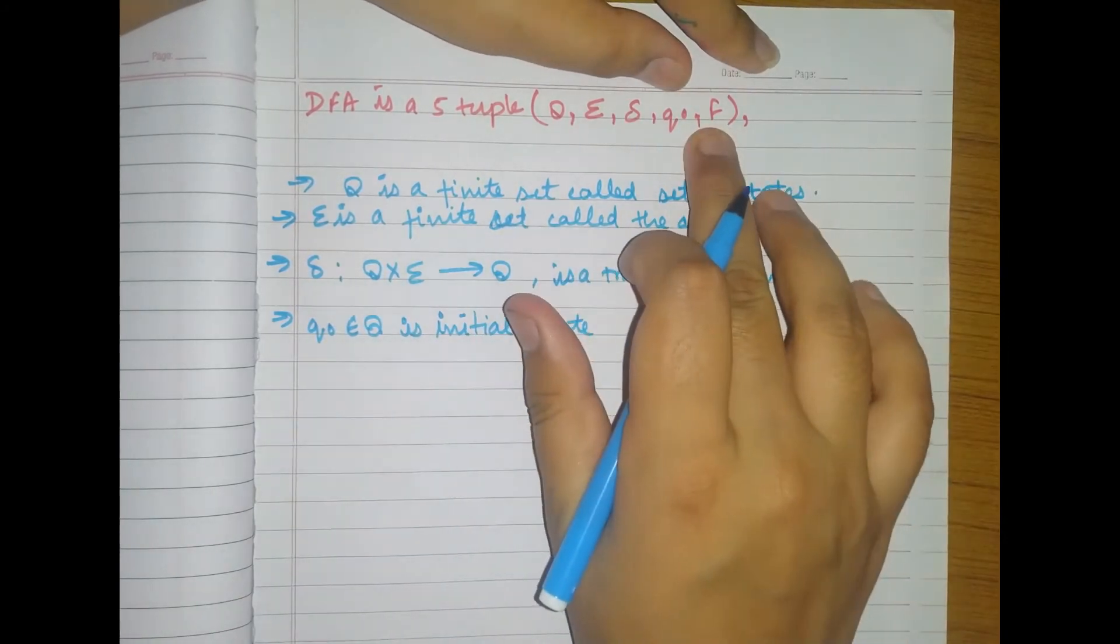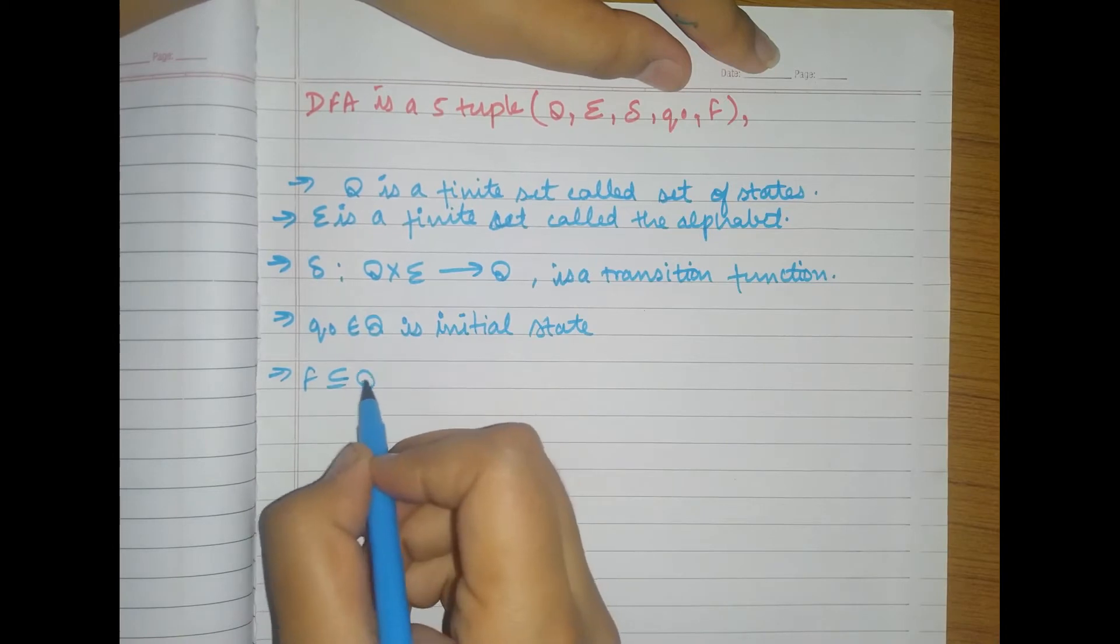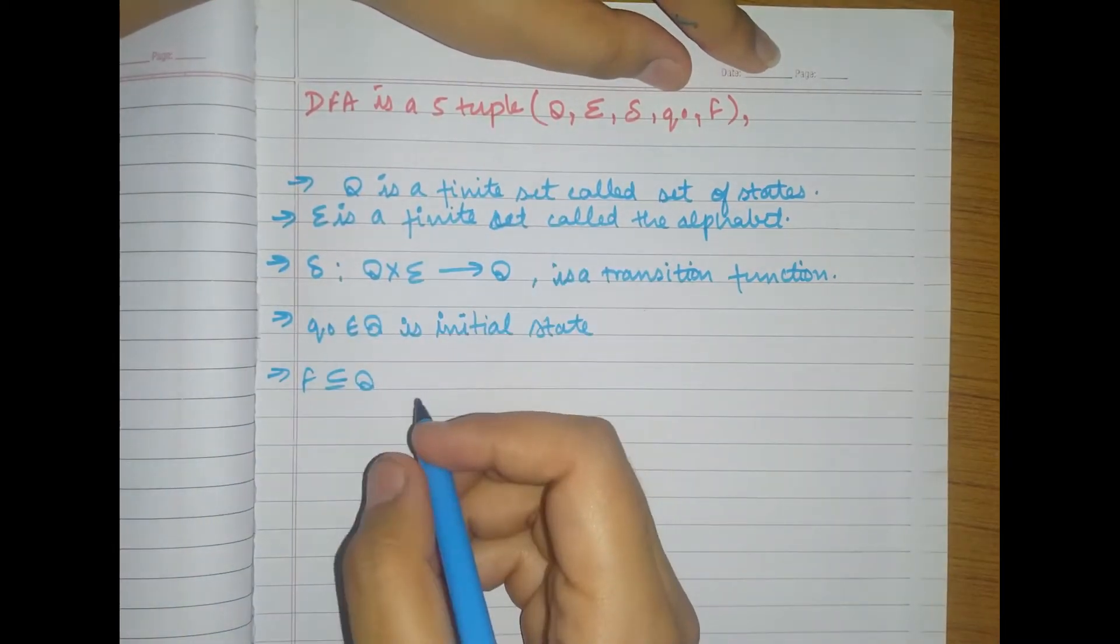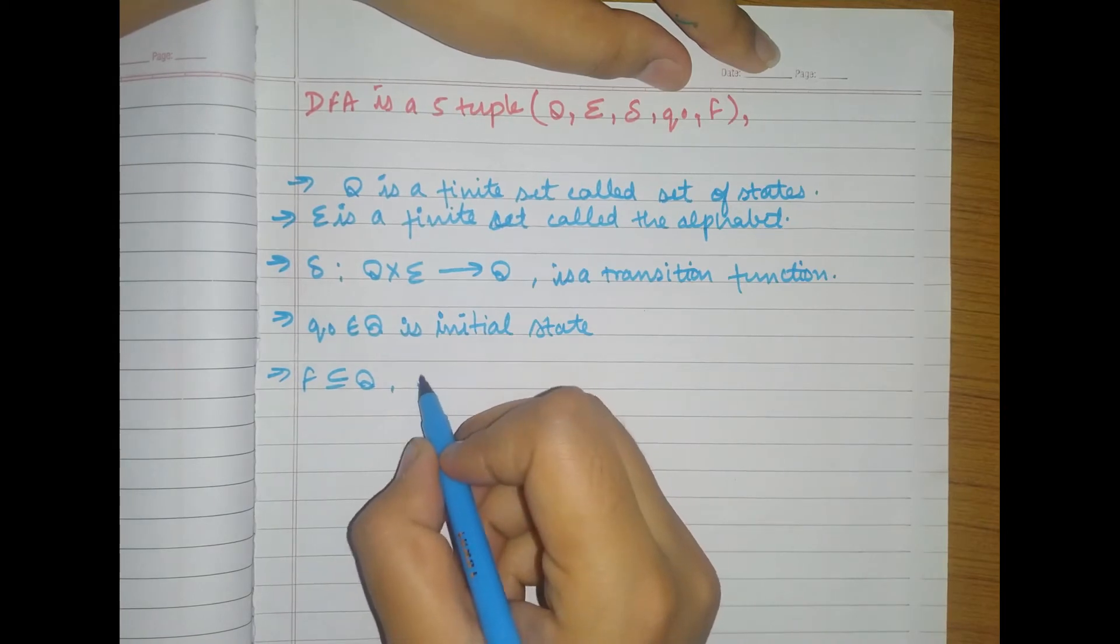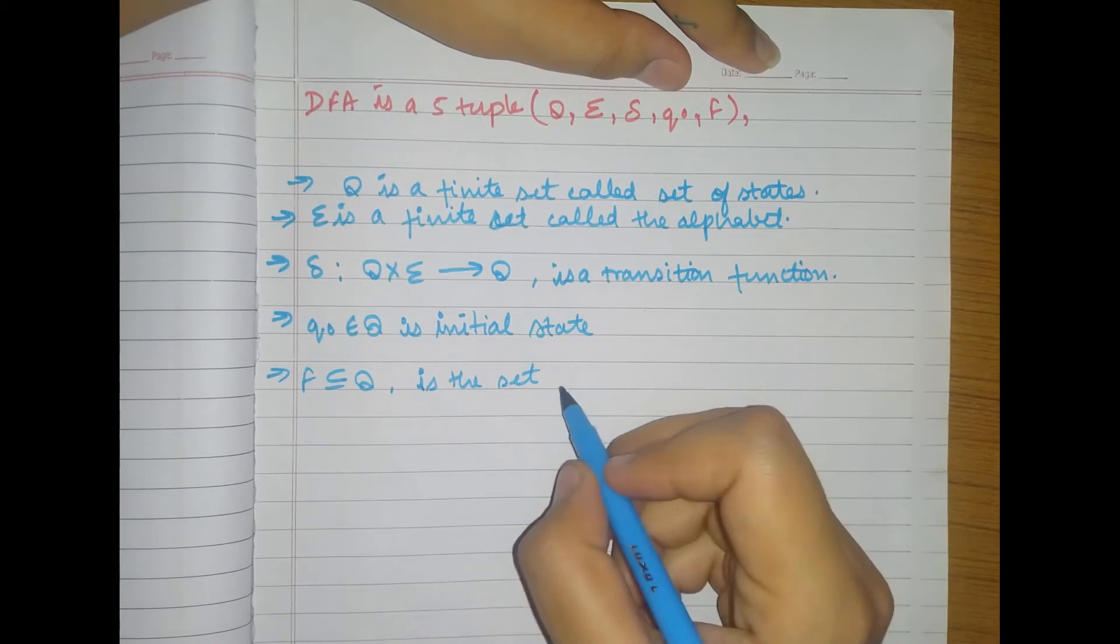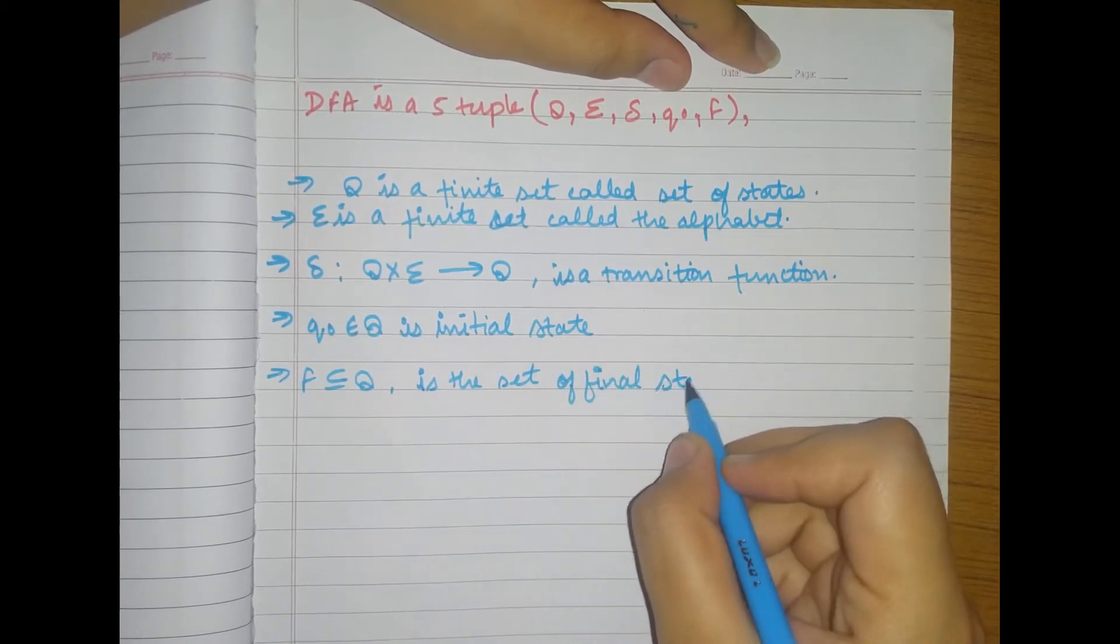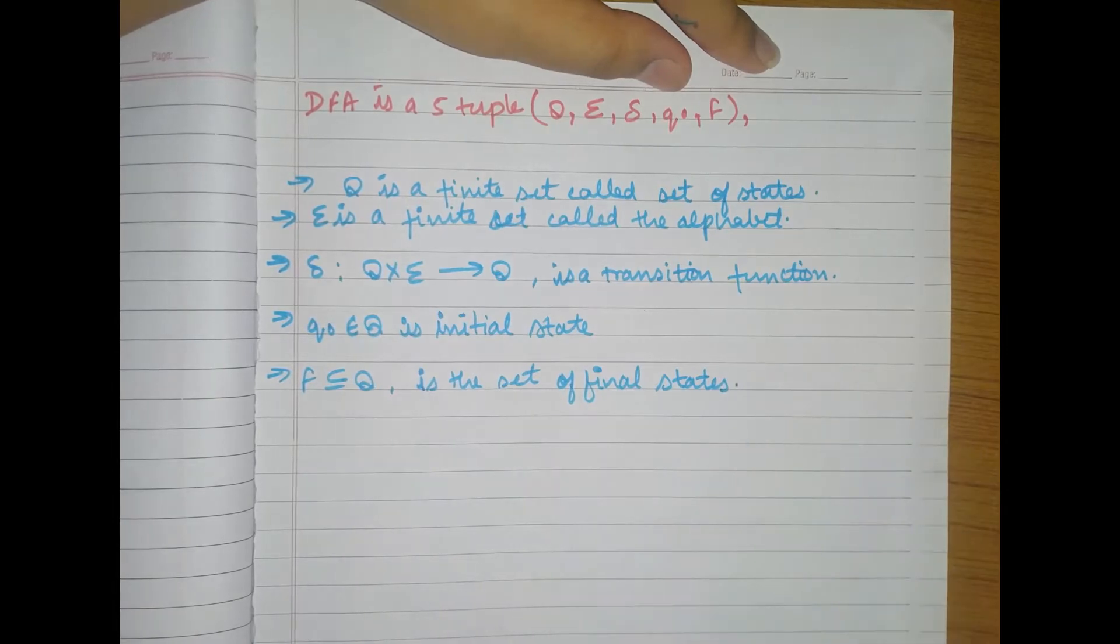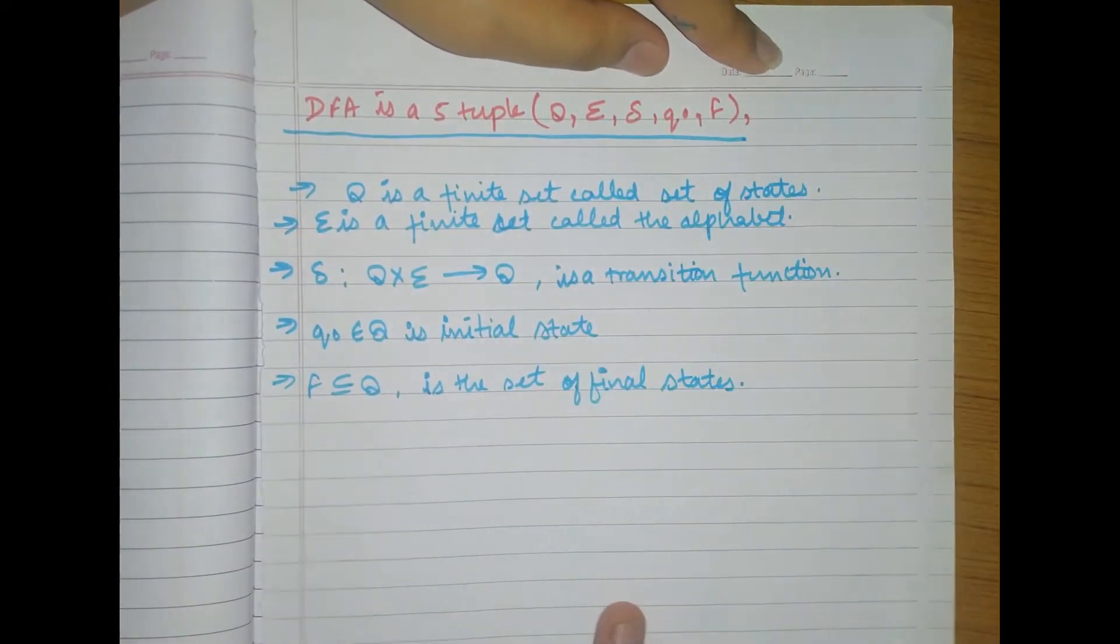Okay, so what is this F here? F is basically the subset of this finite set. And this F is having the set of final states. So this is known as the 5-tuple representation of DFA.